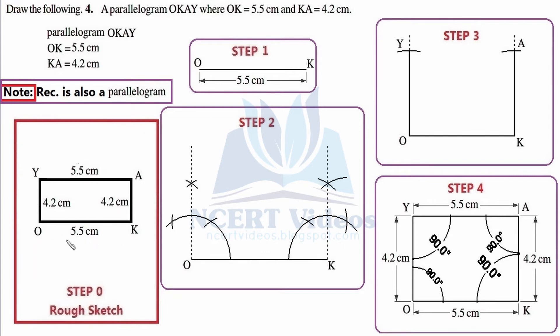In step number one, we simply connect O and K with a distance of 5.5 centimeters. The same has been done in step number one. Pause and try to construct it yourself. At vertices O and K we need to construct 90-degree angles.